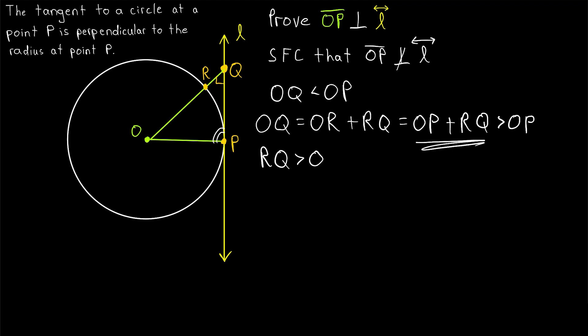Which means OP plus RQ is greater than OP. That's important, because remember what's on the left side of this equality string. It's OQ. So, we've shown that OQ is greater than OP. So, there's our conclusion. OQ is greater than OP. And that is our contradiction.